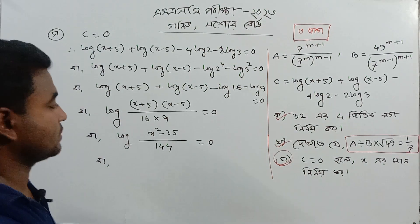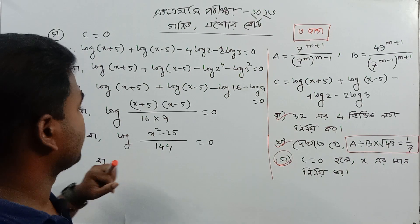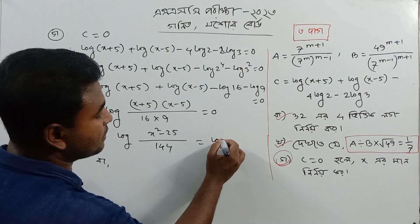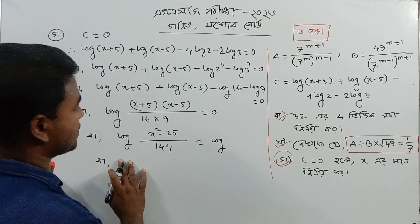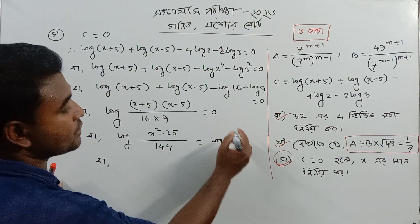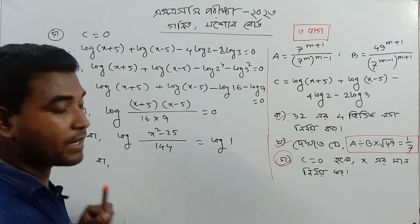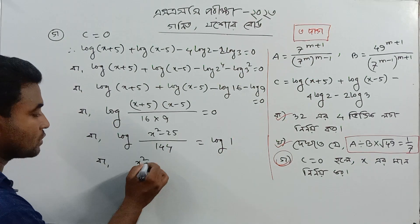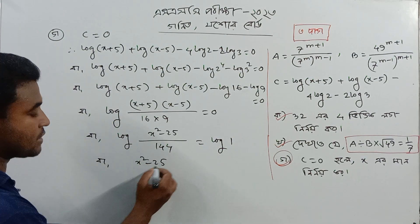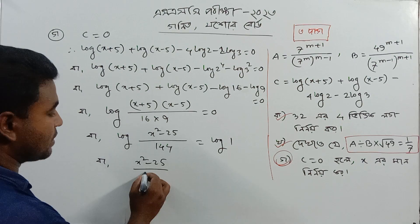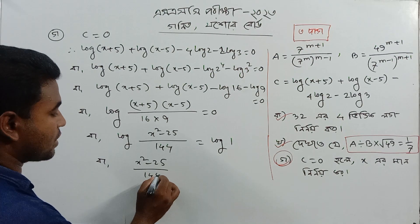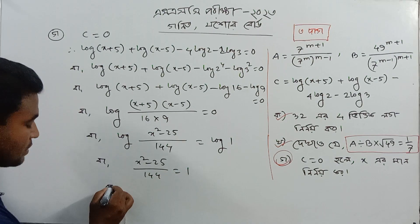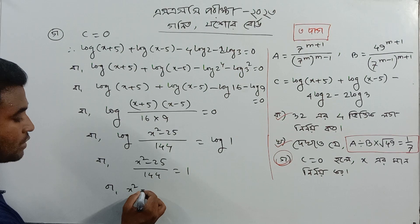So when you have log, log is equal to 0, and log 1 is equal to 0. Then you give the log: x squared minus 25, base 4 equal to 1. Then you apply the log, r equal to 114.